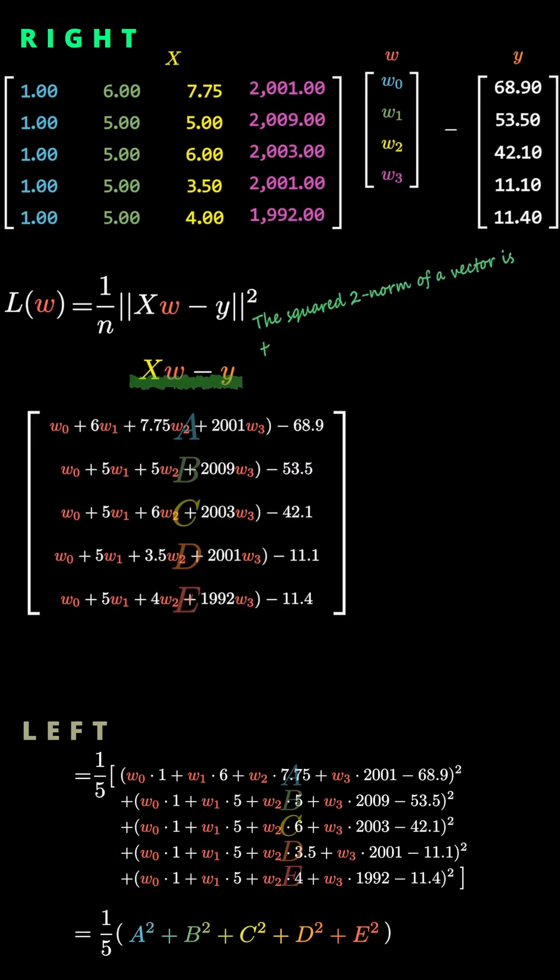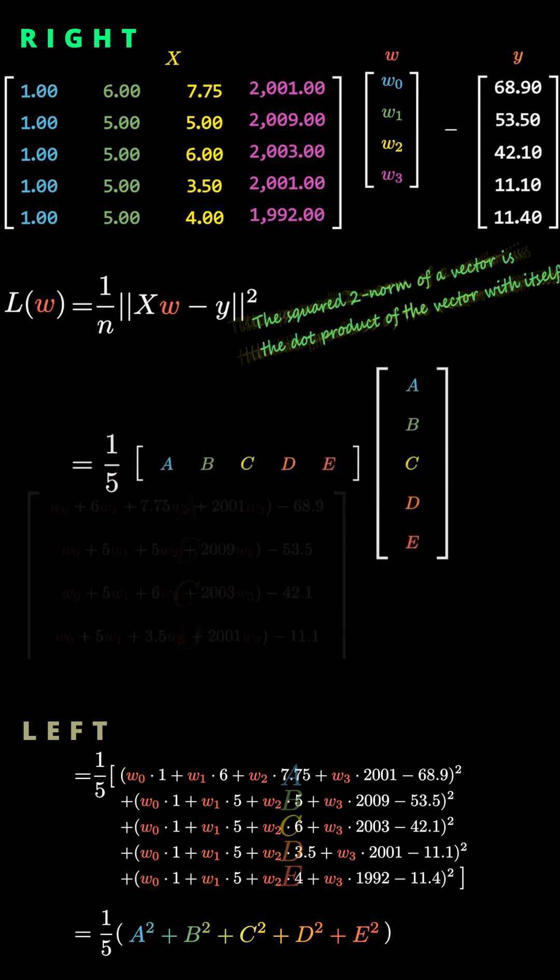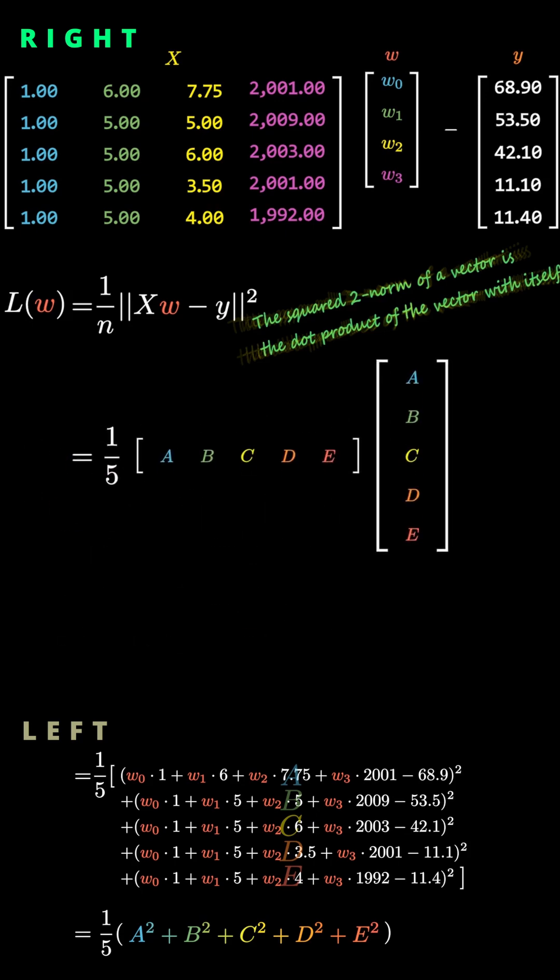Now let's rewrite the right-hand side in that form. The squared 2-norm of a vector is the same as its inner product with itself. We still have five data rows. So we multiply by 1 over 5 and take the inner product. And there we have it. It's exactly the same equation as the vector form on the left.